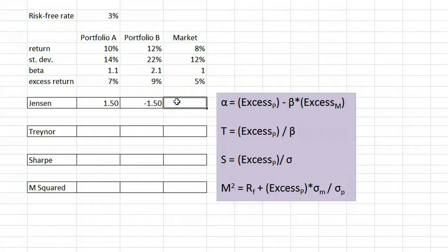We don't actually calculate Jensen's alpha for the market itself. If we did, we'd just be comparing the market's return to itself and we would just get 0.